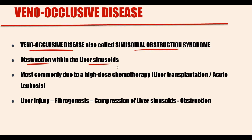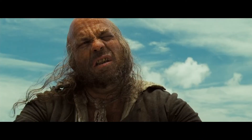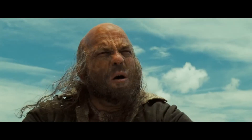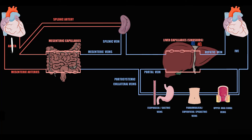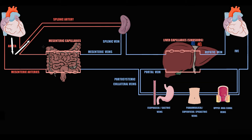To understand how venoclusive disease develops, we have to recall splanchnic circulation. Initially the left ventricle pushes blood into the aorta, and from the aorta blood goes into the splenic artery that supplies blood to the spleen, and mesenteric arteries that supply blood to the intestine, where in mesenteric capillaries fluid exchange occurs.